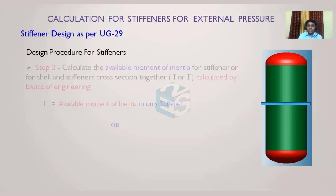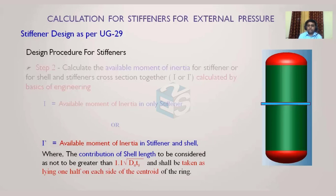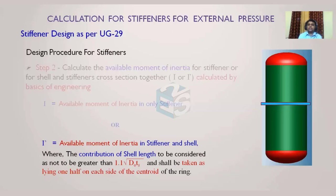I is the available moment of inertia of the stiffener only; I' is the available moment of inertia of the stiffener and shell cross-section combined. When the shell contributes to the moment of inertia at the stiffener ring location, we must limit the shell length considered. The code limits this to 1.1 × √(Do × ts), where Do is the outside diameter of the shell and ts is the shell thickness. Only this length contributes to the moment of inertia calculation.